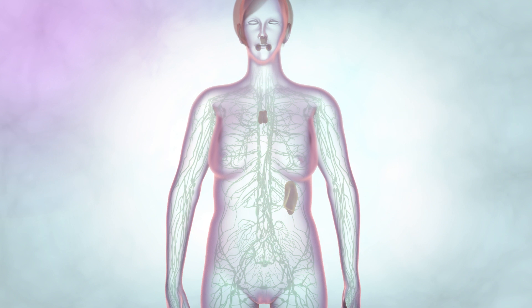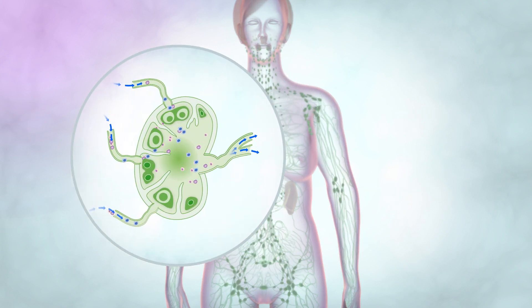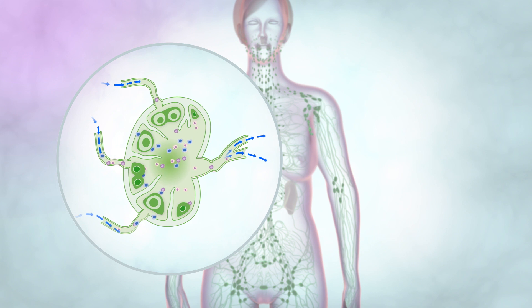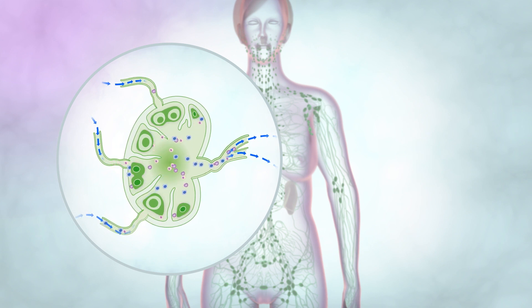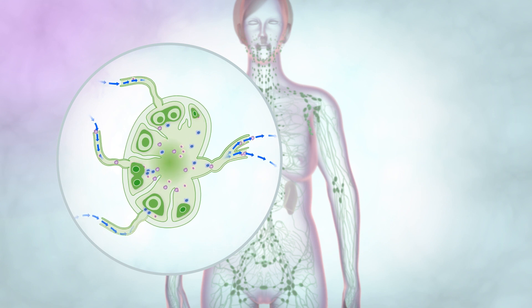Along the lymph vessels are small, bean-shaped lymph glands. You might be able to feel these in your neck, under your arm and in your groin, but they are also throughout the body including the chest, abdomen and pelvis.